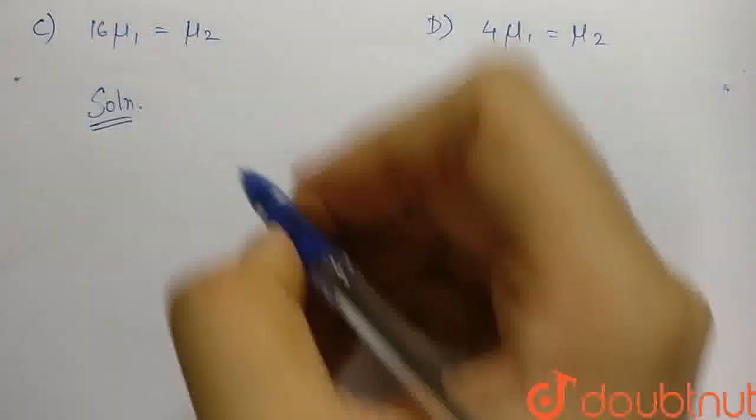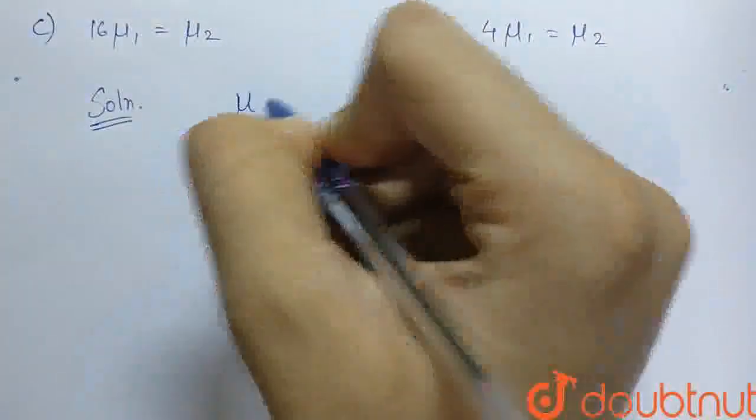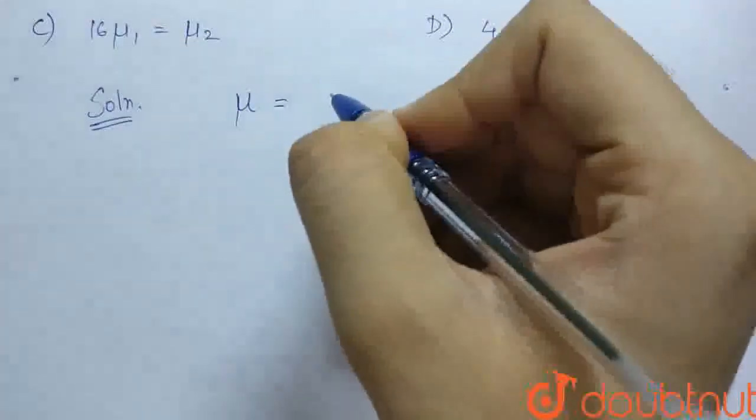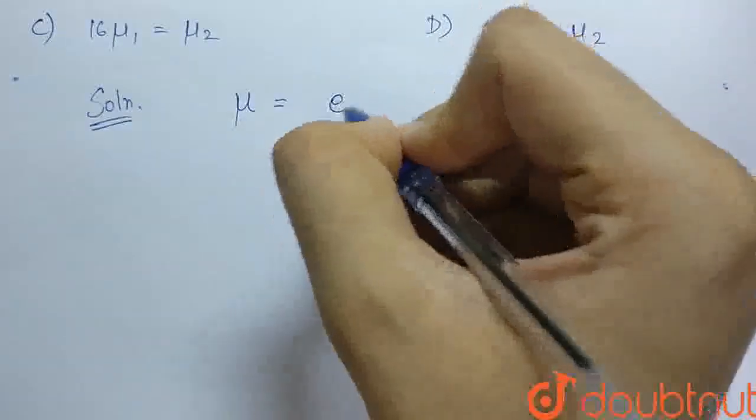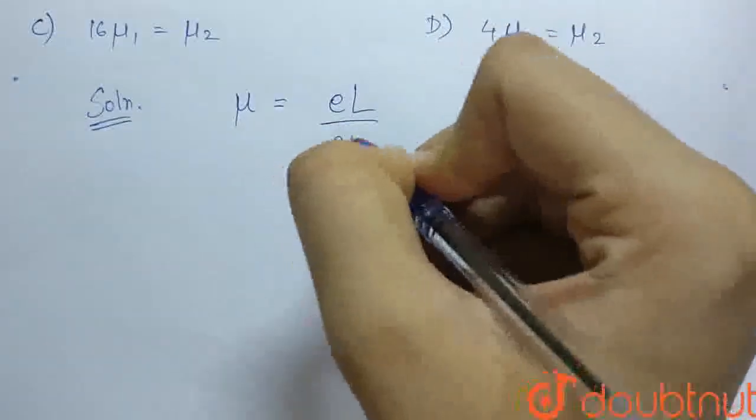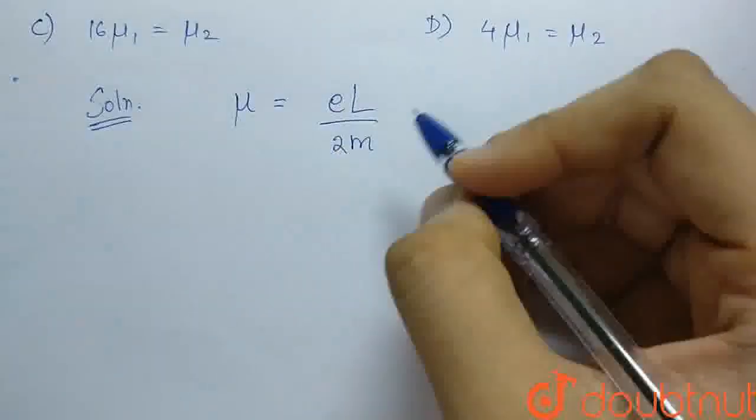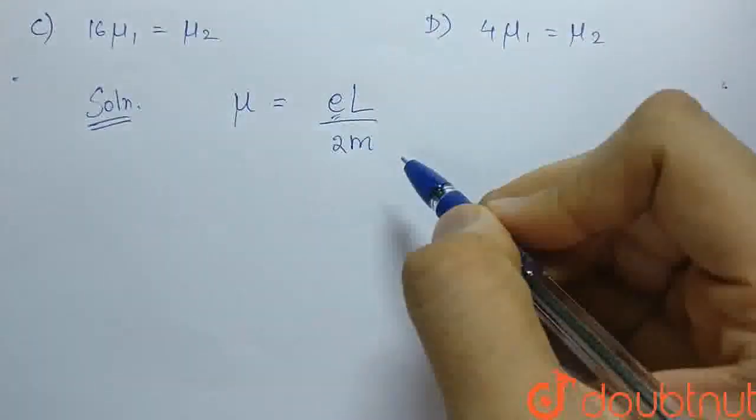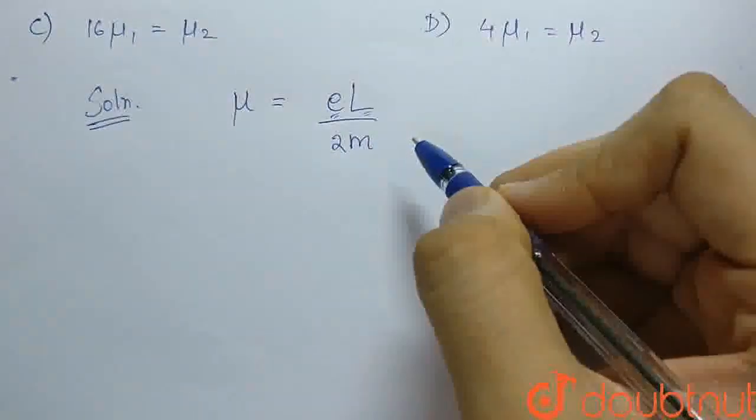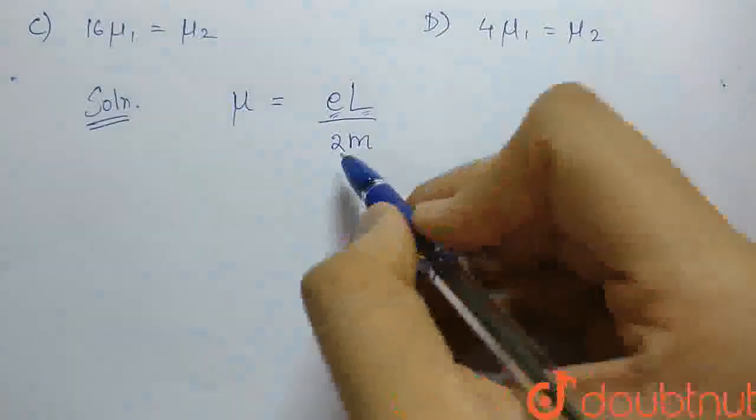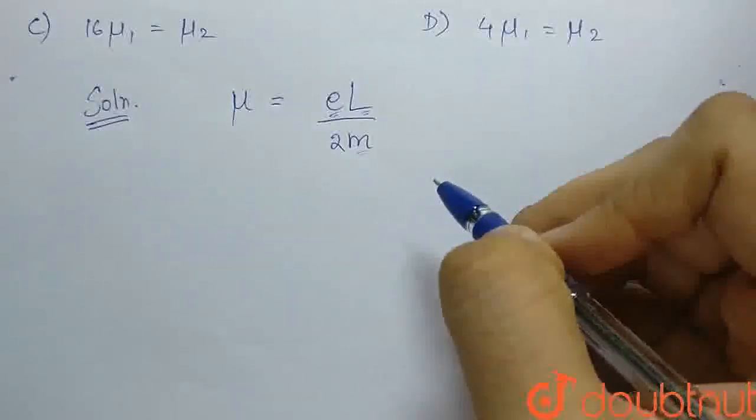So we know that the magnetic moment mu of a revolving electron around the nucleus is e L by 2m, where e is the charge of the electron, L is the angular momentum, and m is the mass of the electron.